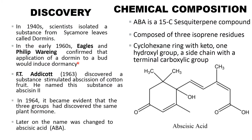Discovery of abscisic acid: in the 1940s, scientists isolated a substance from leaves called 'dormin.' In the early 1960s, it was confirmed that the application of dormin to a bud would induce dormancy. In 1963, F.T. Addicott discovered a substance that stimulated abscission of cotton fruit, naming it 'Abscisin II.' In 1964, it became evident that three groups had discovered the same plant hormone. Later, the name was changed to abscisic acid, also represented as ABA.